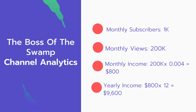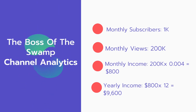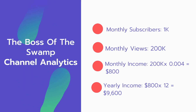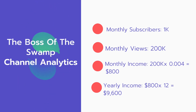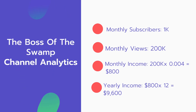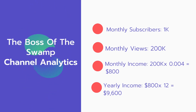And now for the income. The monthly income will be 200,000 views multiplied by $0.004, equals $800 every month. And for the yearly income: $800 multiplied by 12 equals $9,600.